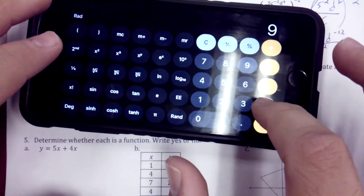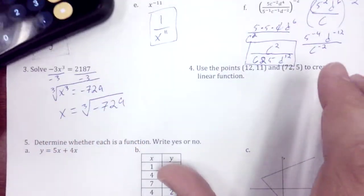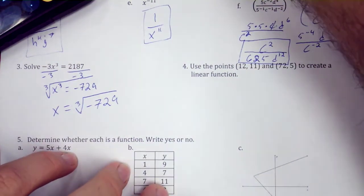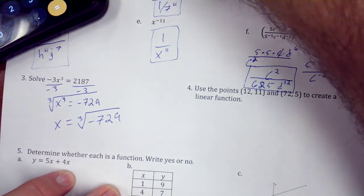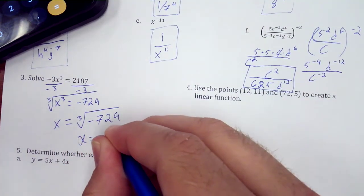So if we got 9 times 9 times 9, so we get 9. So the cube root of negative 729 is, in fact, just simply negative 9. So x equal to negative 9.